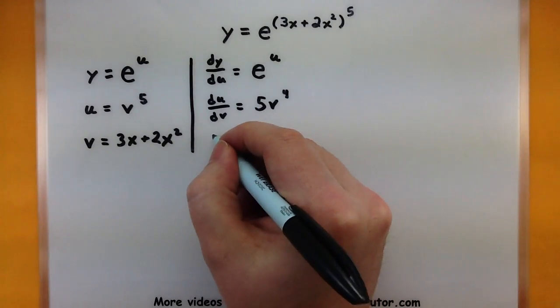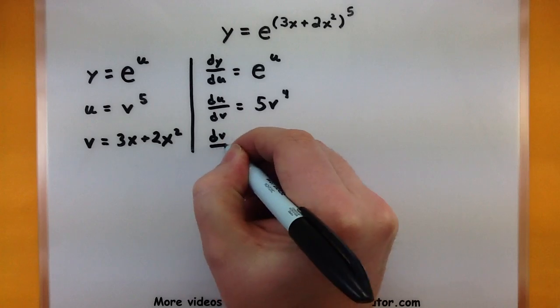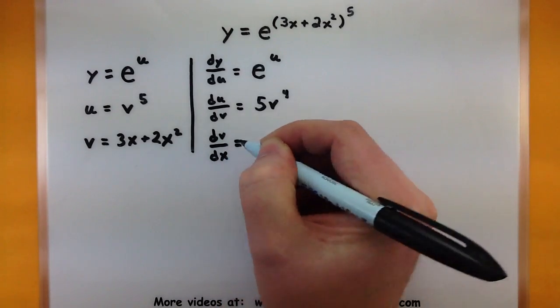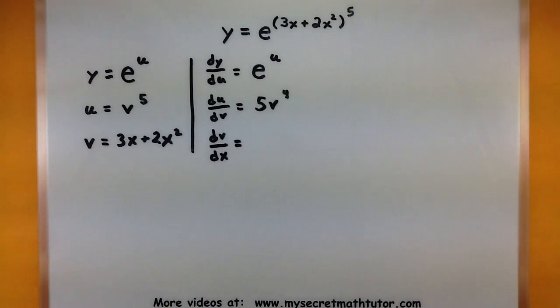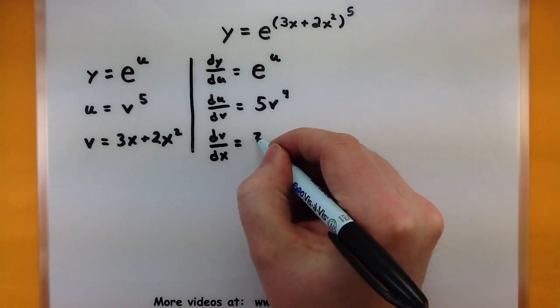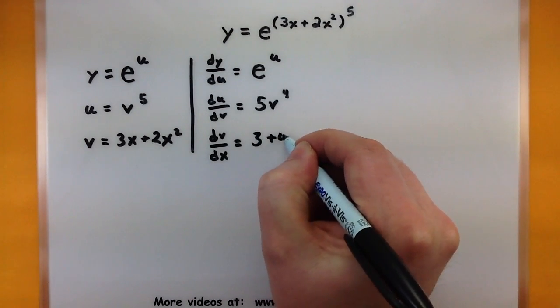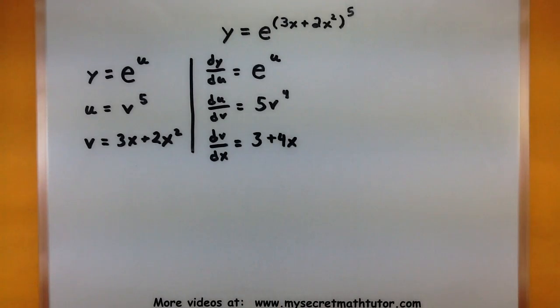Okay, on to the last one, dv dx. And notice how we're always taking the derivative with respect to the variables that are being used in that particular piece. Alright, so again, here we have another polynomial, 3 plus 4x.